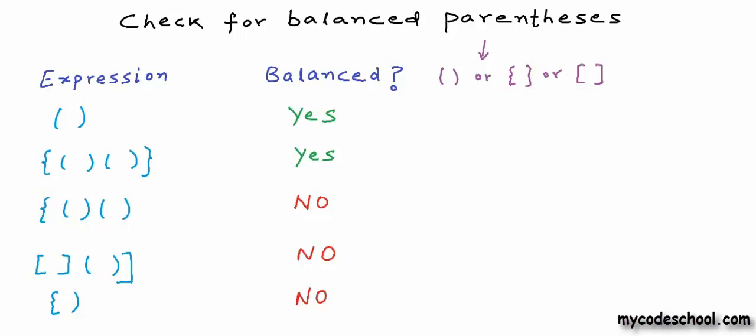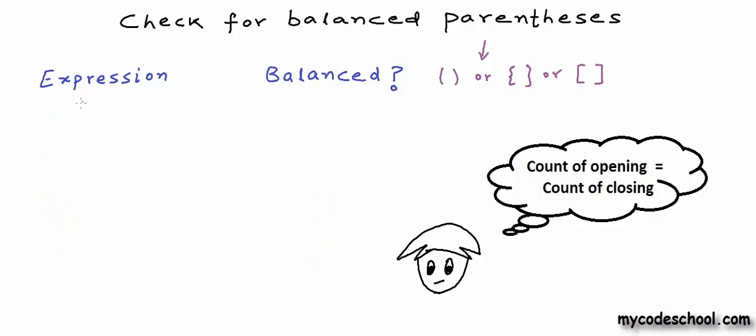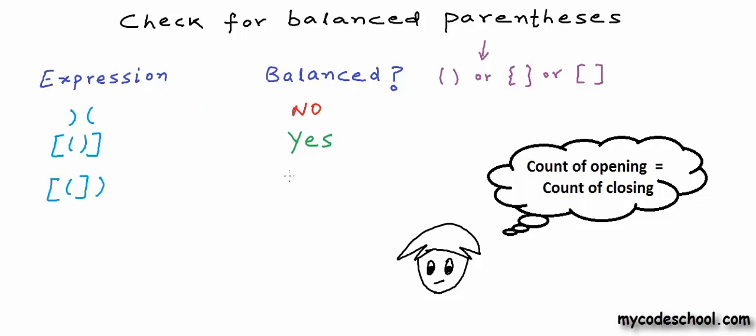So how do we solve this problem? One straightforward thing that comes to mind is that we can count the number of opening and closing symbols for each of the three types — they should be equal. The number of opening parenthesis should equal closing parenthesis, and same for curly braces and square brackets. But this will not be good enough. One expression has one opening and one closing parenthesis but it's not balanced, while another with the same character counts is not balanced either. So this approach won't work.